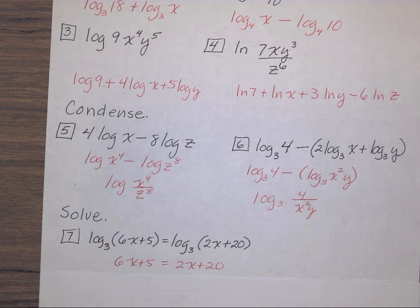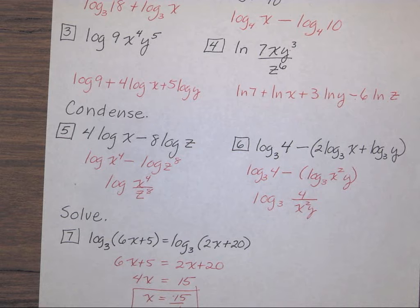Combine like terms. Subtract 2x to bring it over. Subtract 5 to take it to the other side. Divide by 4. And you've got your answer.